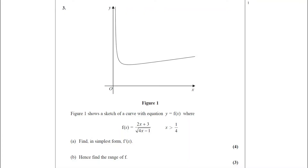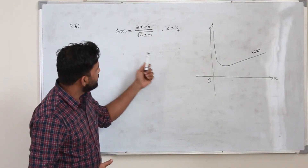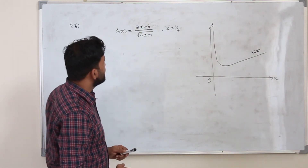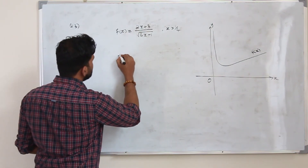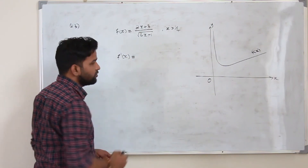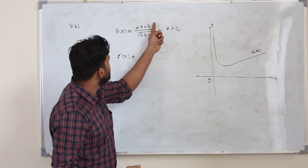Question number 3. Figure 1 shows a sketch of the curve with equation y = f(x), where f(x) = (2x + 3) / √(4x − 1), for x > 1/4. Part A: find f′(x). This question carries 4 marks. Part B: find the range of f(x). This question carries 3 marks. In part A they want you to differentiate f(x) with respect to x, so we are going to apply the quotient rule. For a function of the form u/v, the quotient rule gives: d/dx(u/v) = (v·du − u·dv) / v².